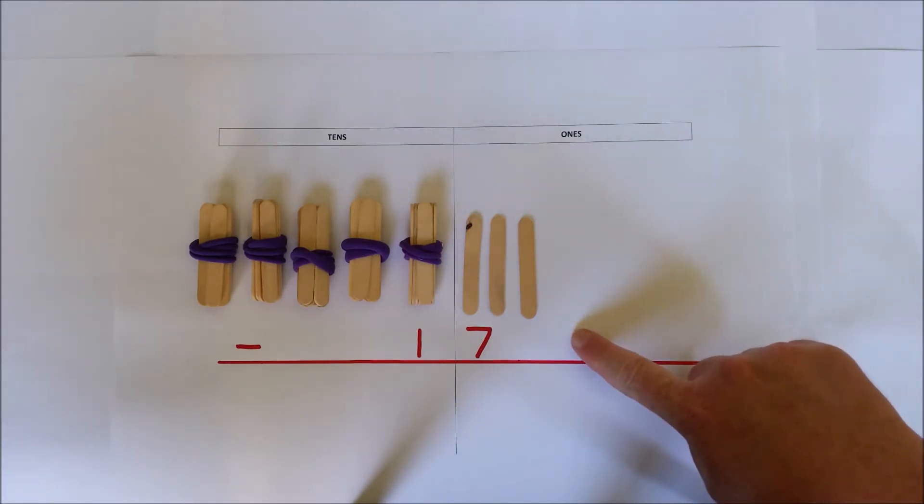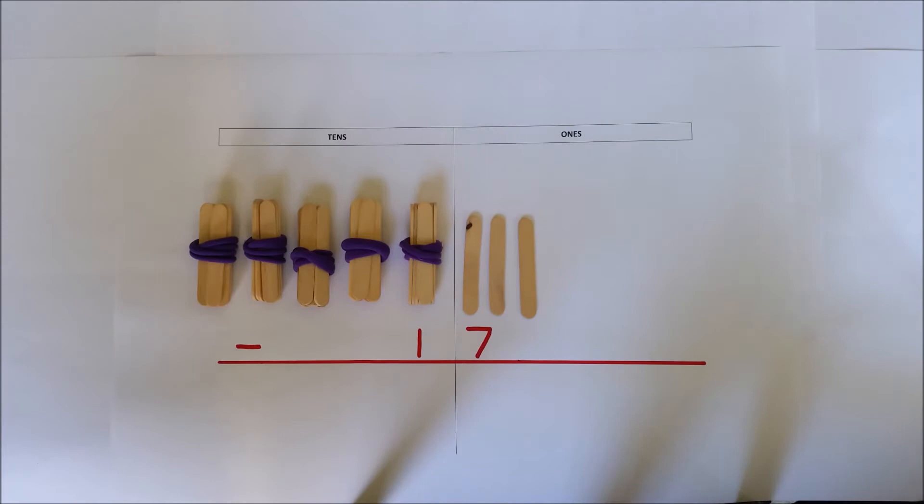Three ones take away seven ones, there are not enough ones, so you need to rename. Rename five tens and three ones as four tens and thirteen ones.